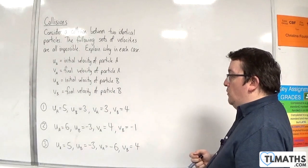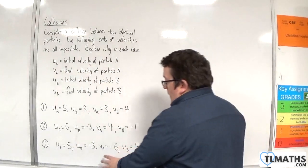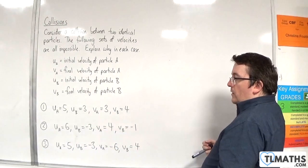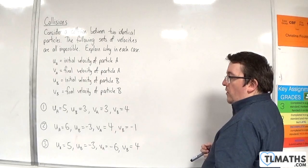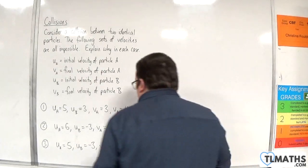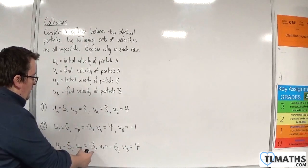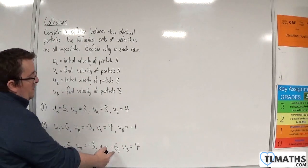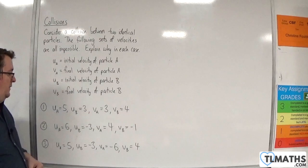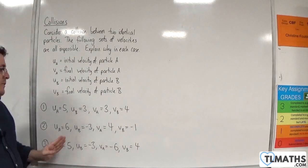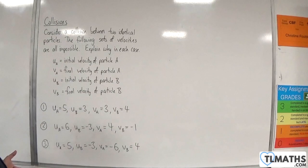What we've got here, we could look at the conservation of momentum, which would be 5M take away 3M, which is 2M. And we've got minus 6M plus 4M is minus 2M. So you'd have 2M equals minus 2M, which obviously doesn't make any sense.